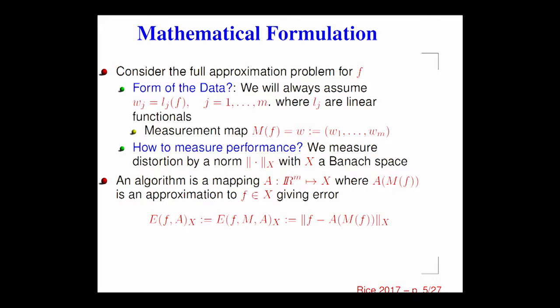If you want to formulate this problem mathematically, you have to spell out the setting, and here are the main features. First, the form of the data: what information am I given about this function f? I assume this is in the form of linear functionals applied to f, such as a point value, an integral, or something of that sort. The second thing is how we're going to measure performance, because if two of us are going to fight about who has the best algorithm, we should agree on how we're measuring what 'best' means. So we have some metric in which we're measuring distortion.